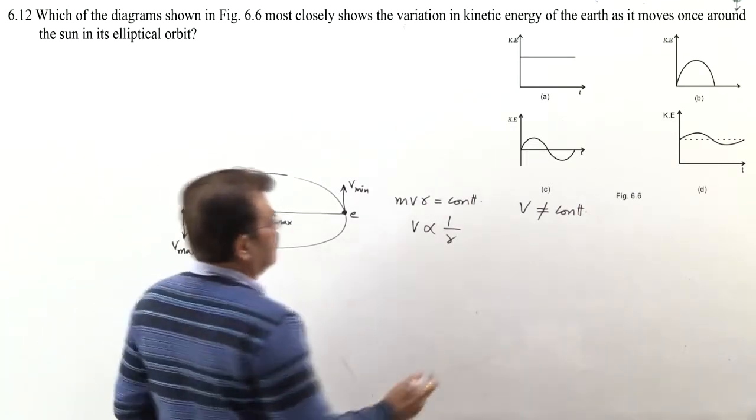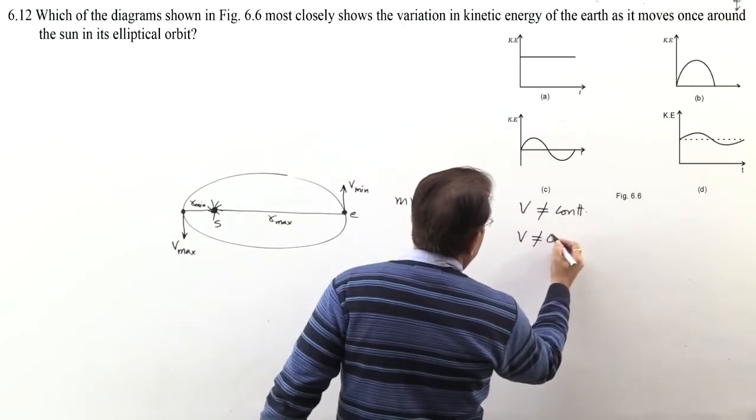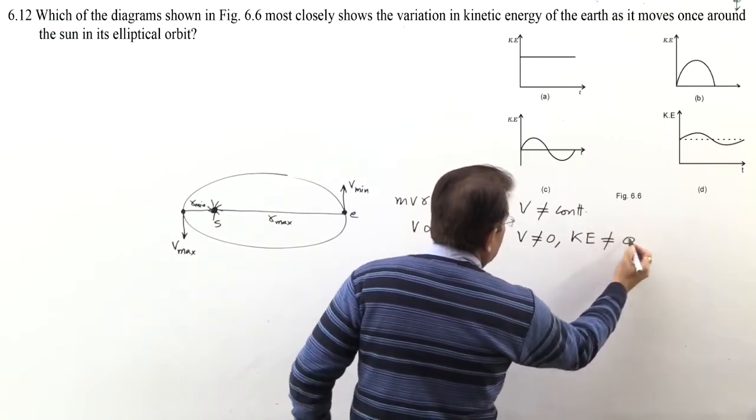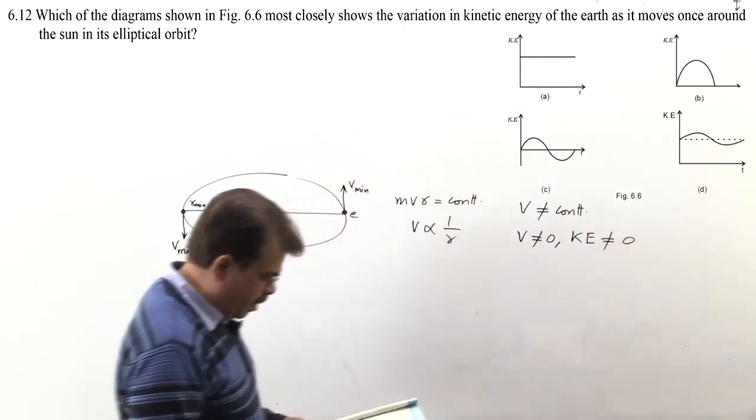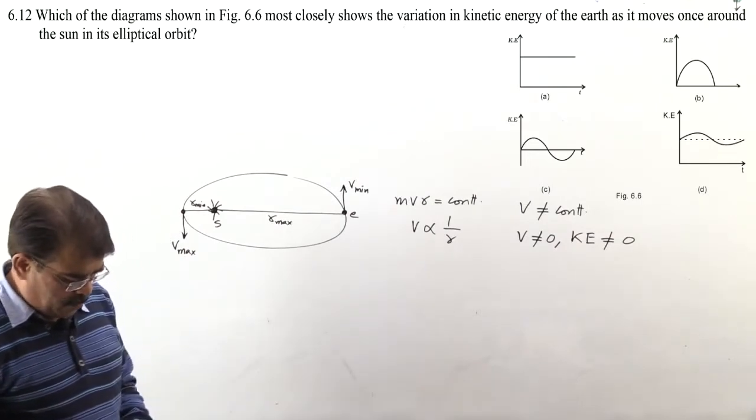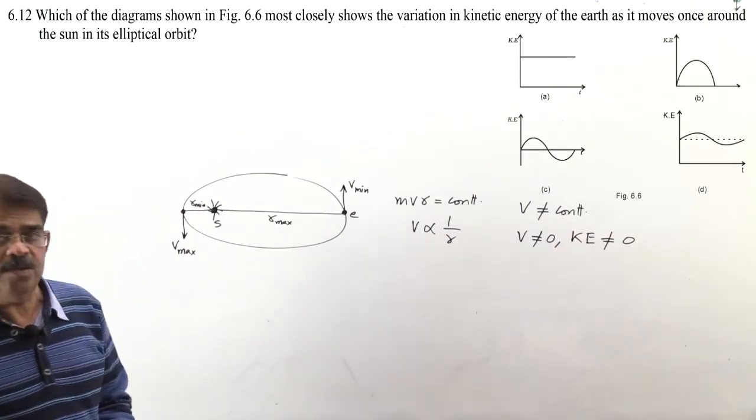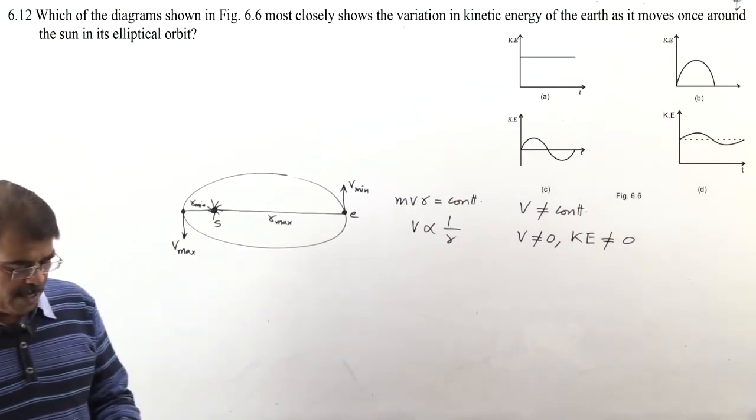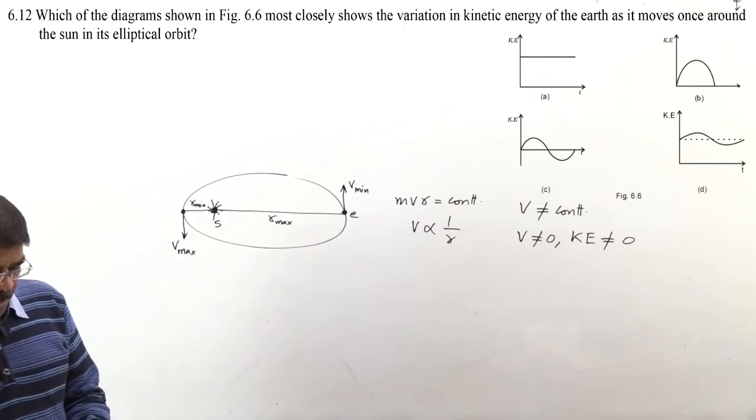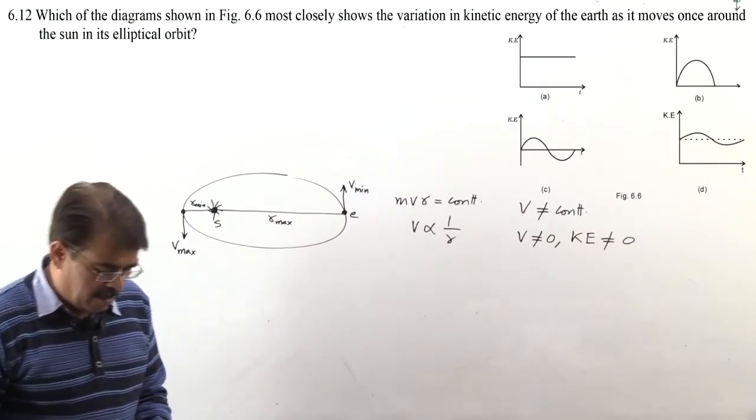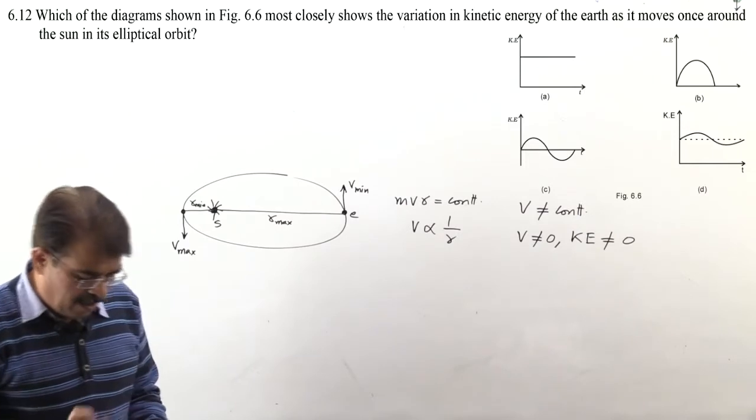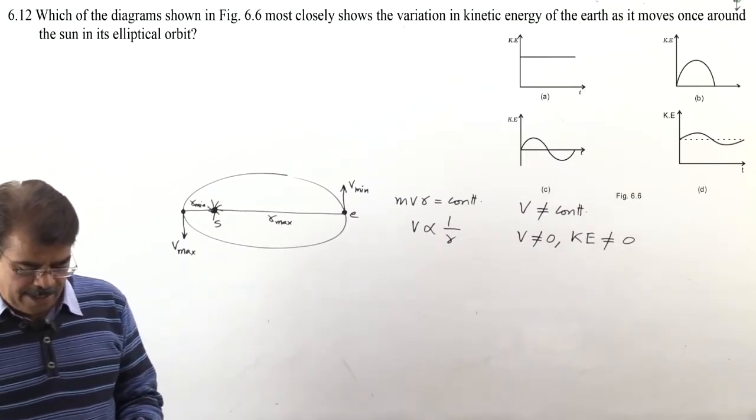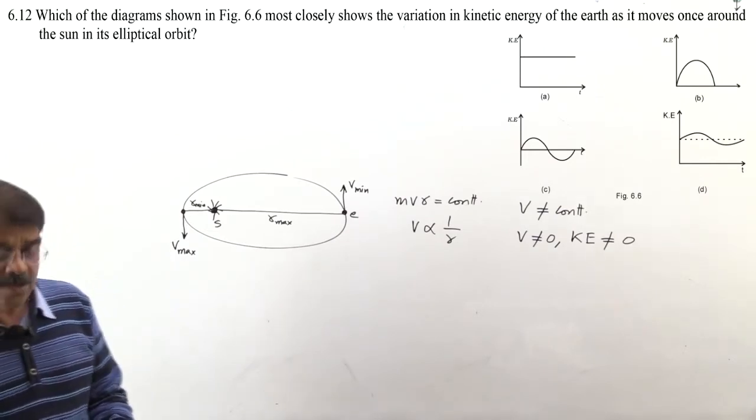Here graph A is shown. In this, kinetic energy with time is shown constant. But velocity is not constant. It varies. That means option A is incorrect. Then can kinetic energy ever be zero? No, because velocity is never zero. So kinetic energy will also never be zero. And for this reason, graph b will be incorrect. And graph c will also be incorrect. In this also, when t is zero, at the instant I've taken as zero, kinetic energy is shown as zero.